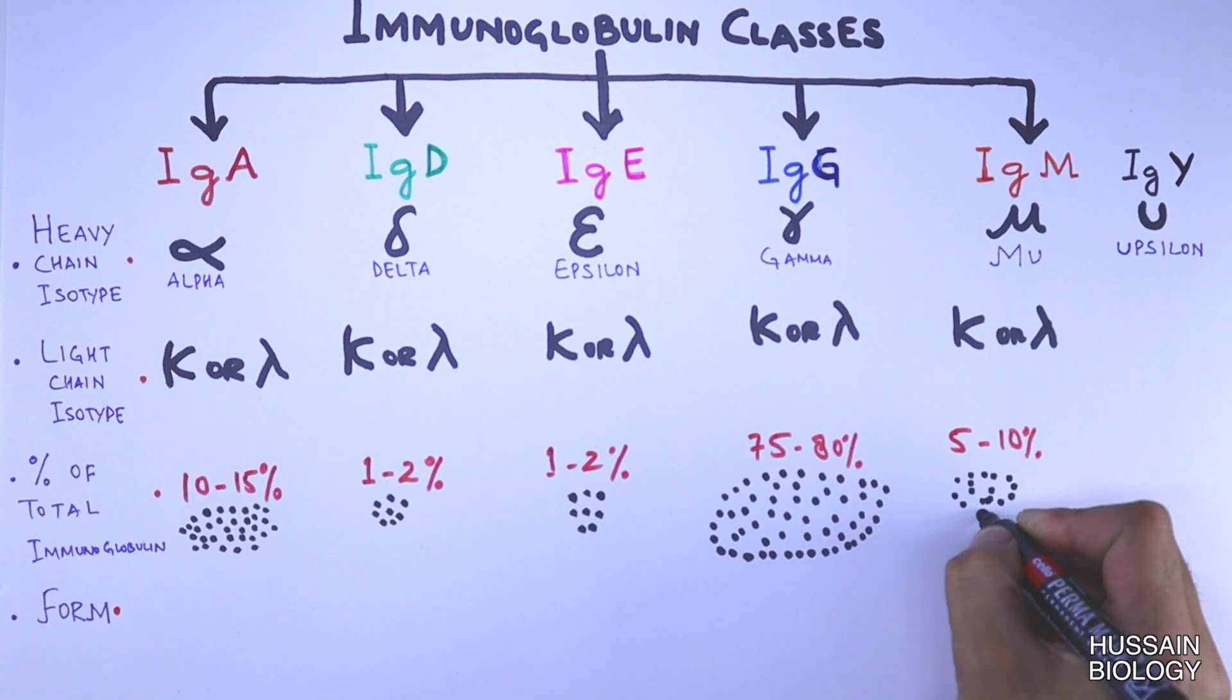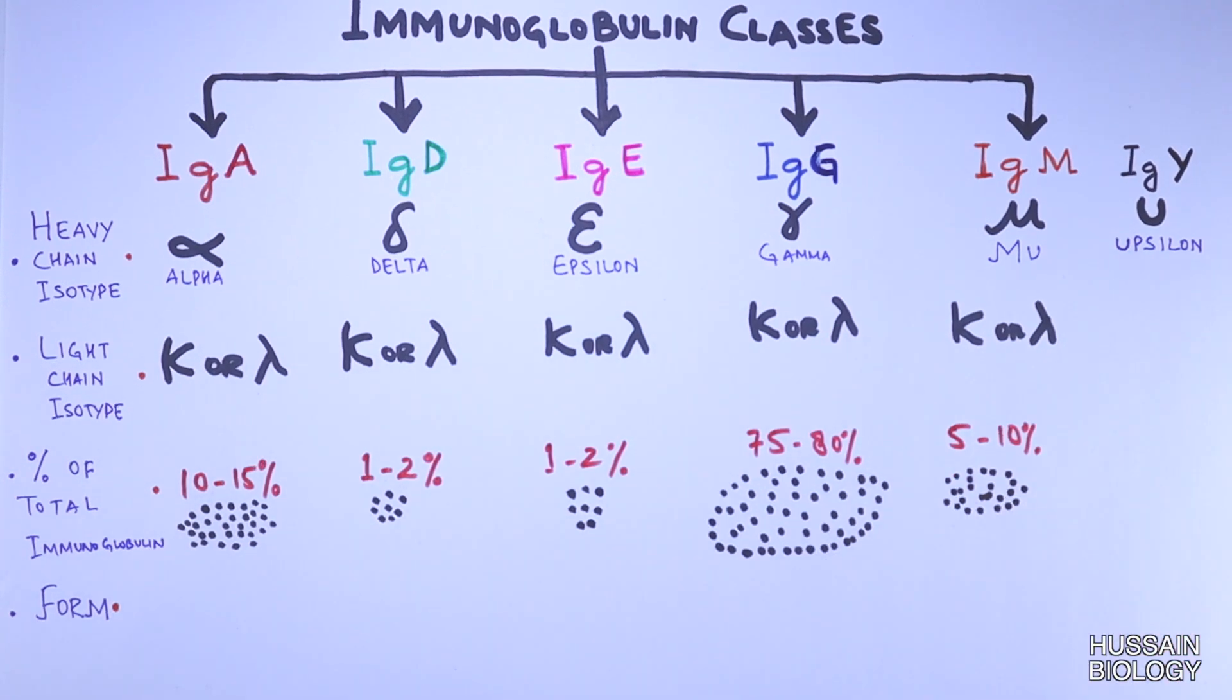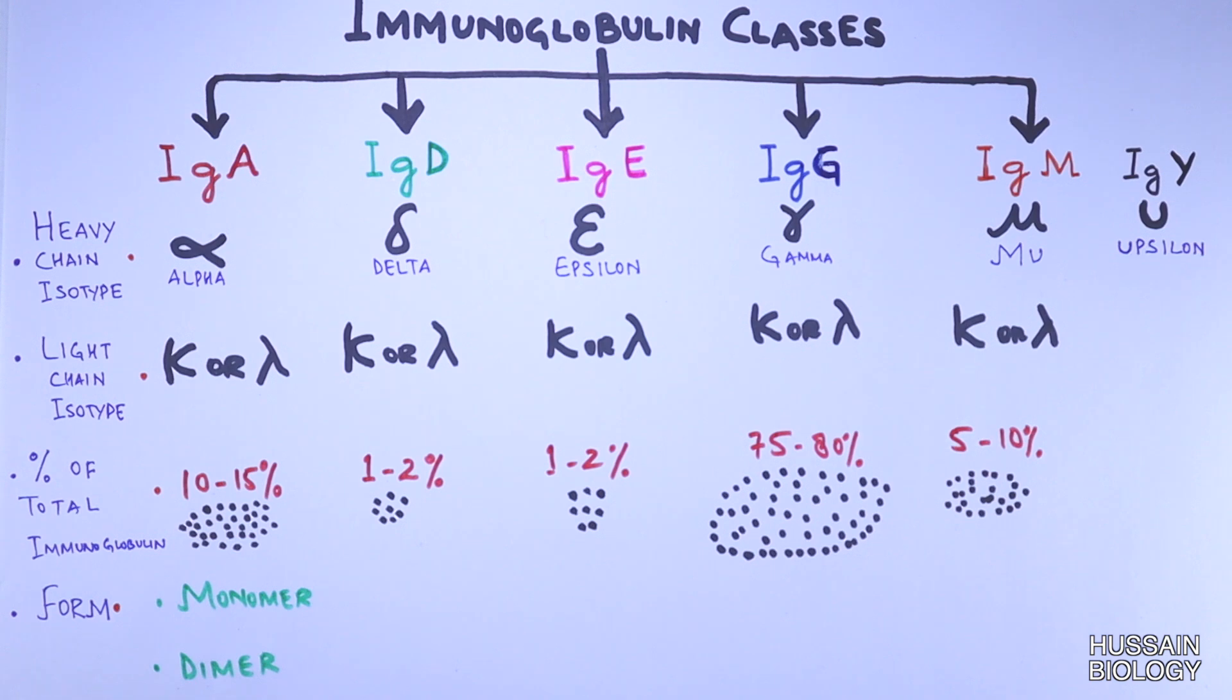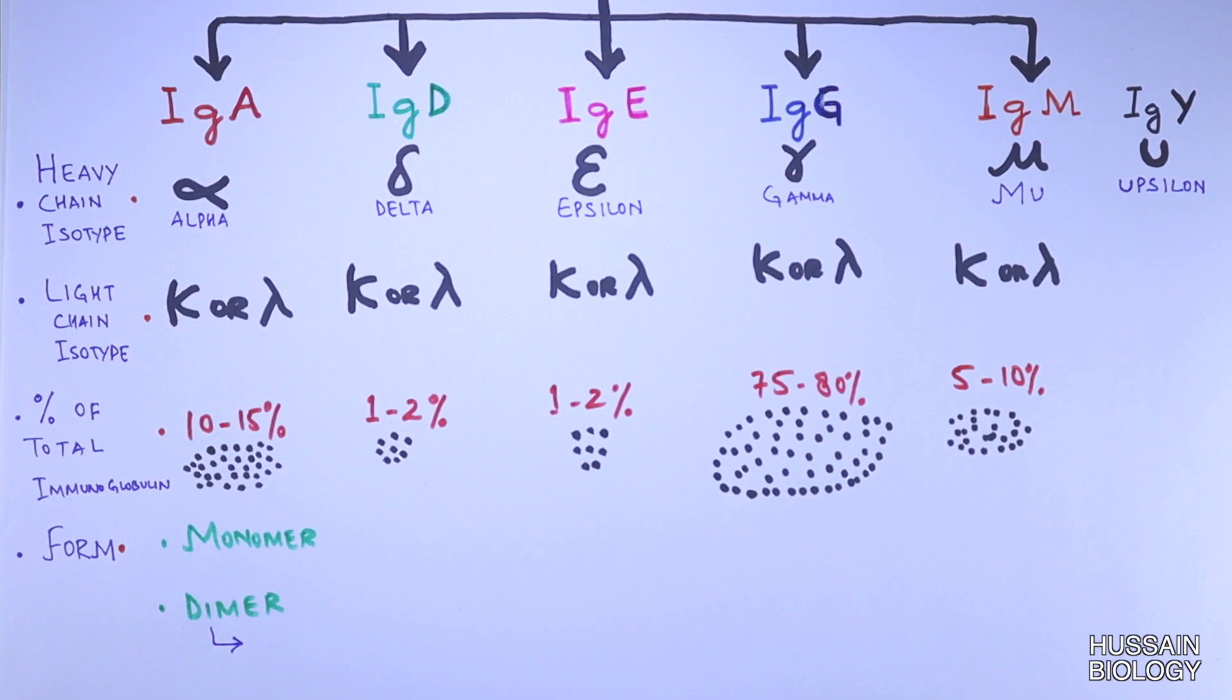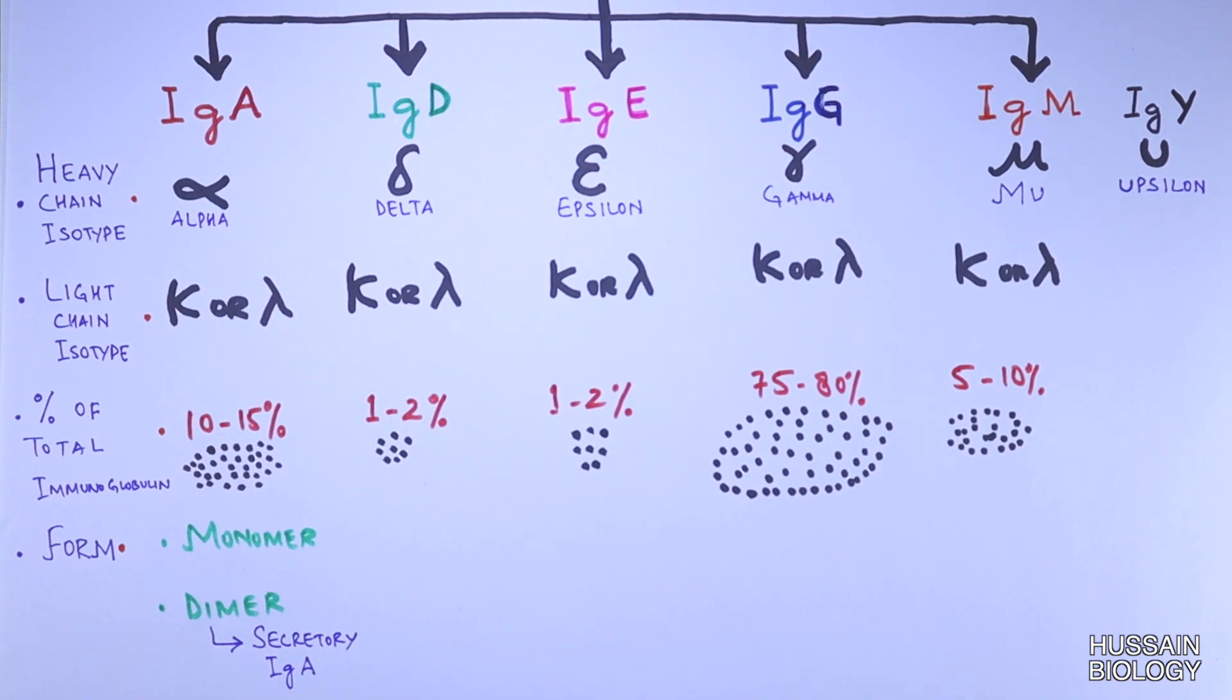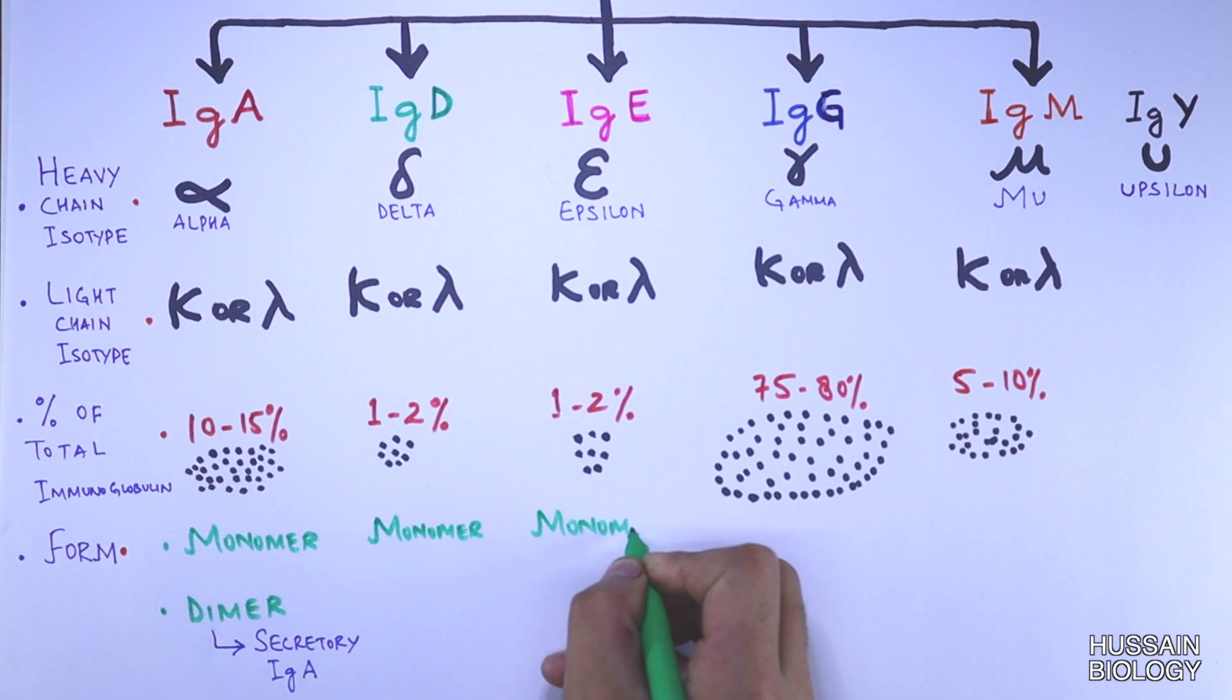Now let's see in which forms these different immunoglobulins occur. The immunoglobulin A occurs in monomer as well as in dimer form, and the dimer form is also termed as secretory form of IgA. Then IgD, IgE, and IgG